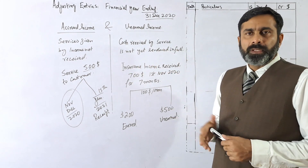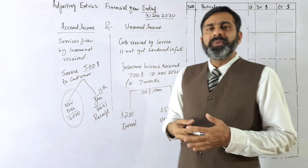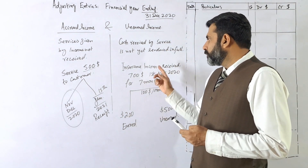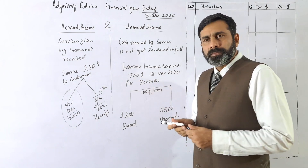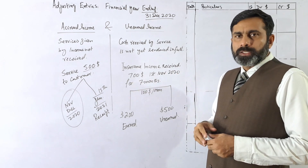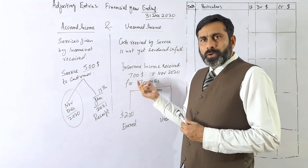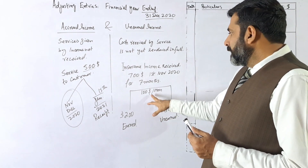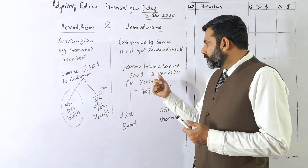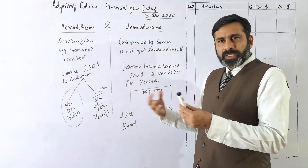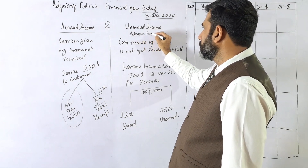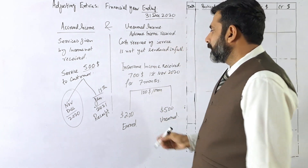In a simple example, consider your business as an insurance company. One customer has been insured for seven months starting the 1st of November 2020, and you have received $700. This means you are receiving approximately $100 per month in insurance, but you have received the money in advance from the customer.